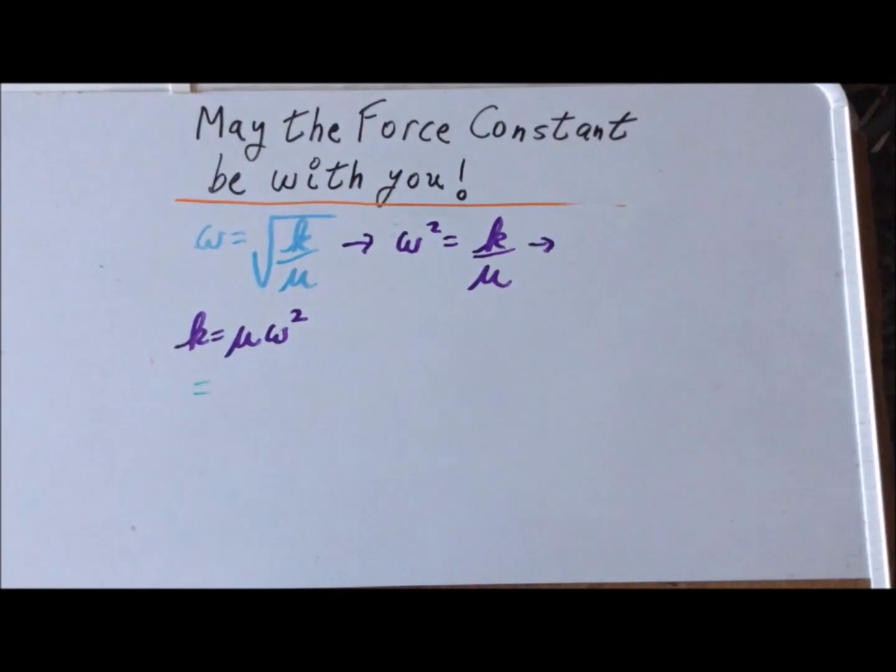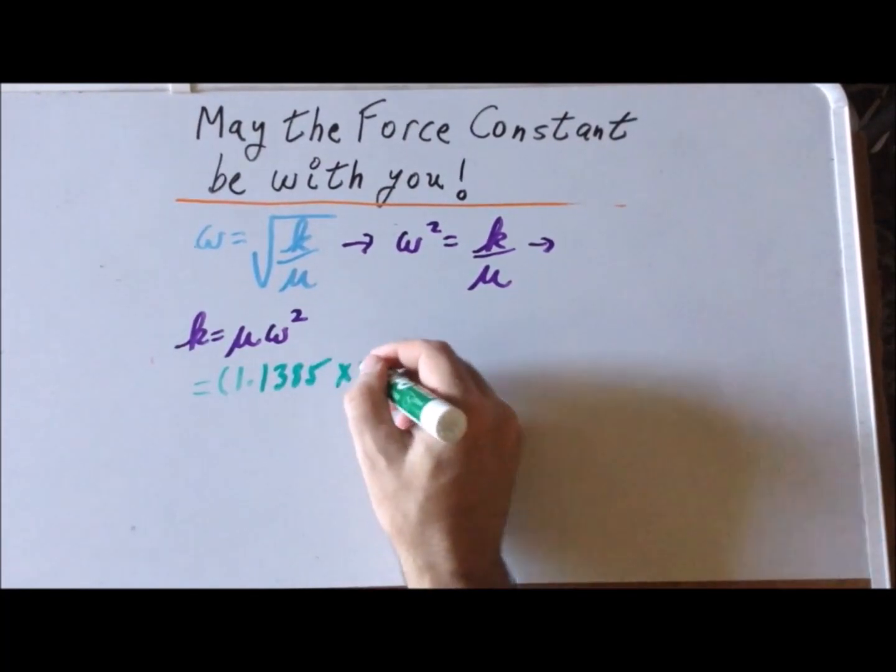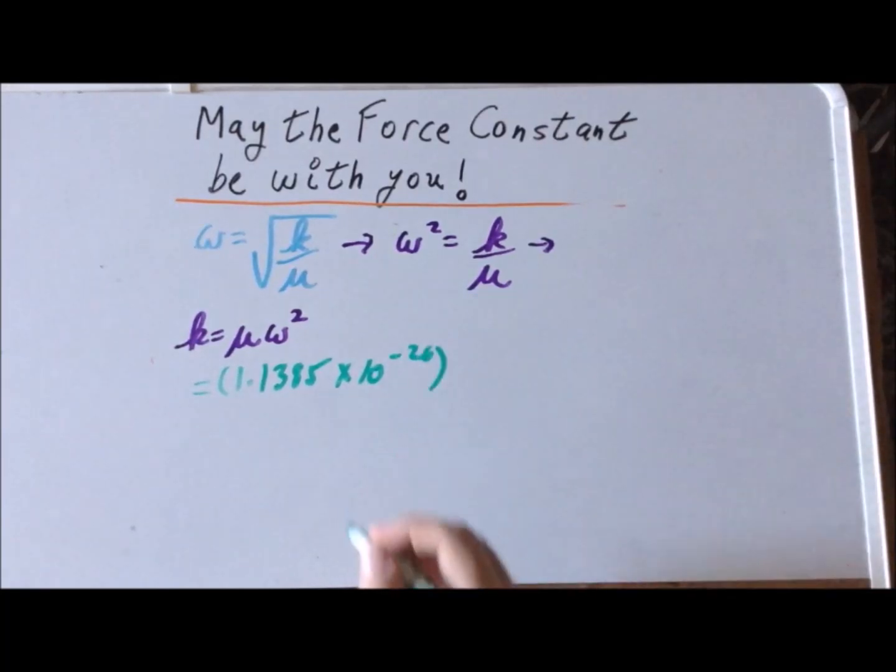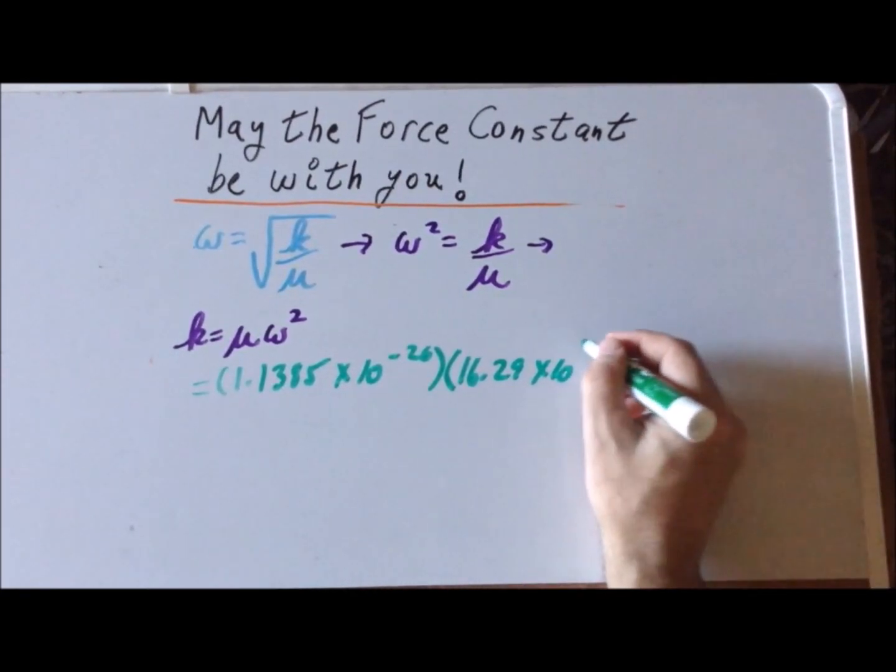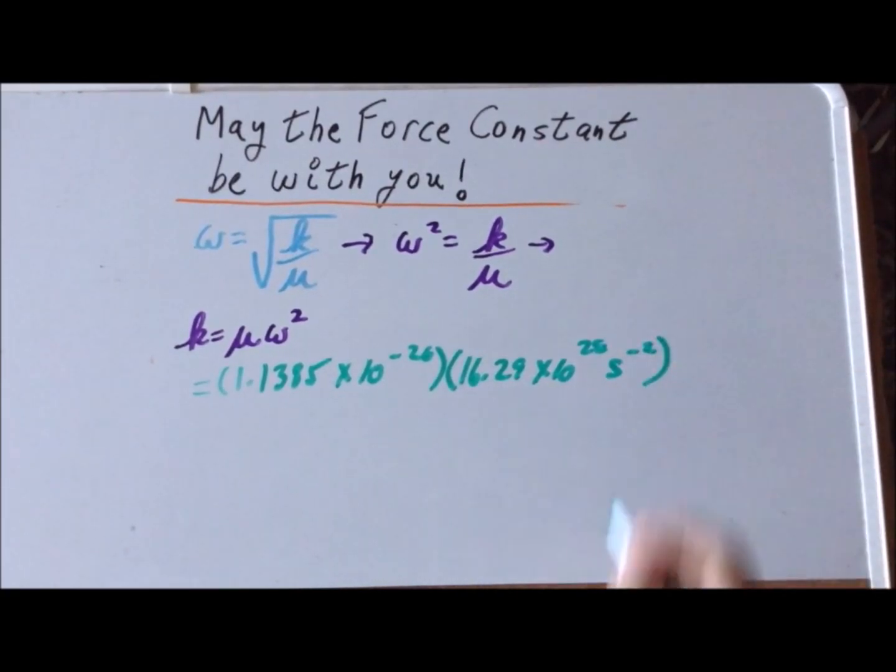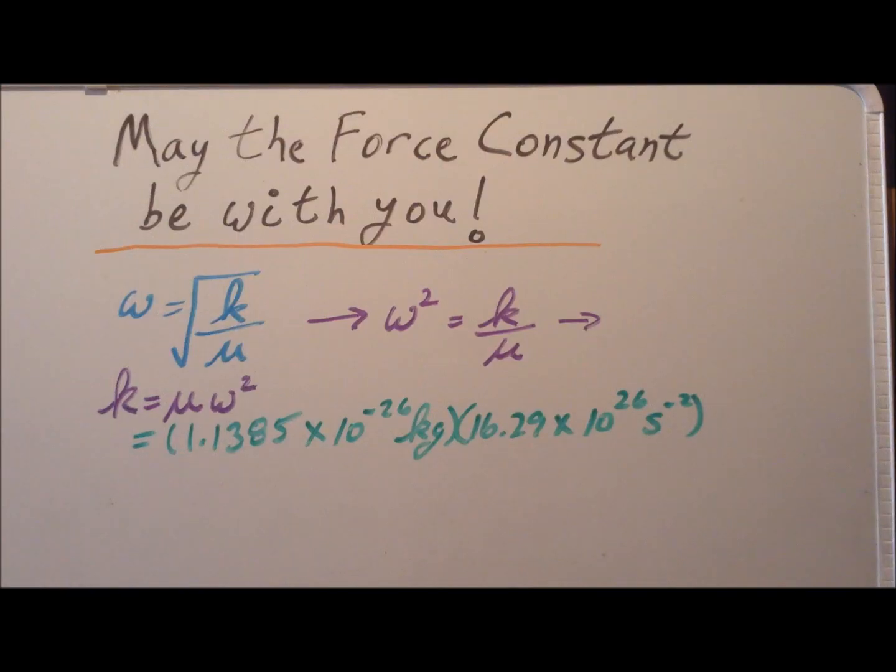The reduced mass equals 1.1385 × 10^-26 kg. Omega squared equals 16.29 × 10^28 s^-2. We simply took omega and squared it. When we multiply these terms, we get 1855 kilograms per second squared.